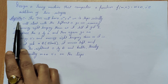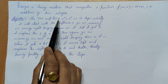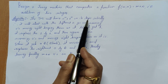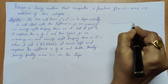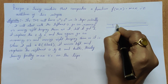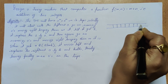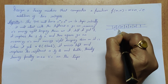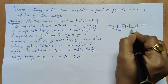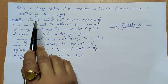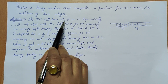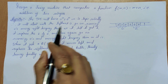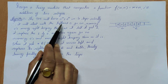Before designing the Turing machine, let us discuss the algorithm. The Turing machine will have 0^m 1 0^n on its tape initially. For example, if the input tape is 00 1 00, then this part is m and this part is n.